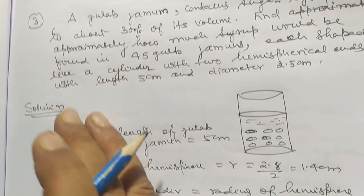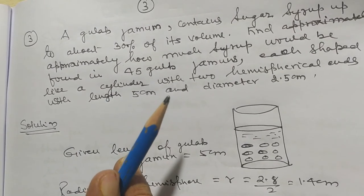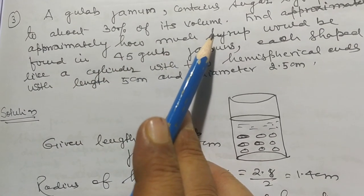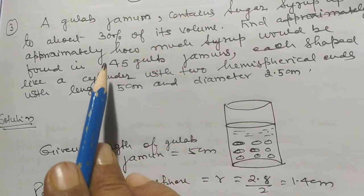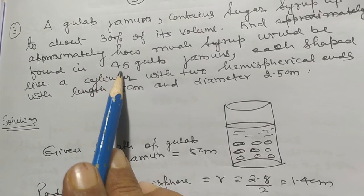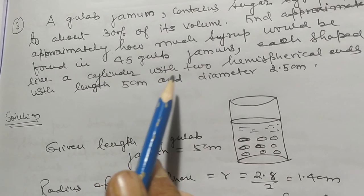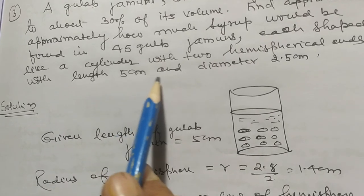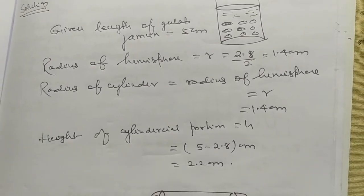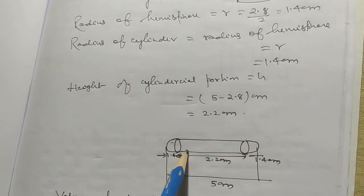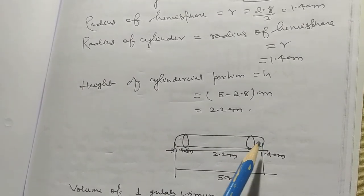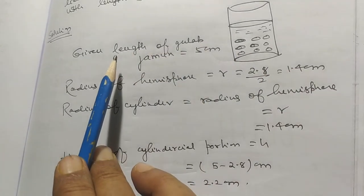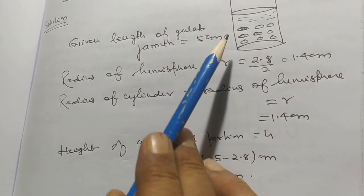My dear student, this problem is very important — it was asked in the examination. A gulab jamun contains sugar syrup up to about thirty percent of its volume. Find approximately how much syrup would be found in forty-five gulab jamuns. It is shaped like a cylinder with two hemispherical ends, with length five centimeters and diameter two point five centimeters. Radius of hemispheres R equals two point five by two, that is one point four centimeters.